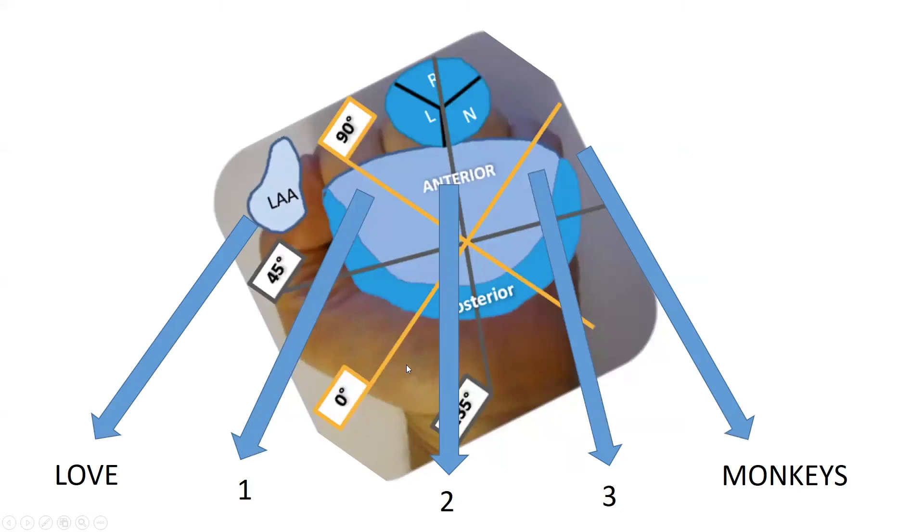In summary, we have two very useful views. The live 3D view, which when we orient in the surgeon's view, we have our left atrial appendage to our left, followed by A1P1, A2P2, A3P3. And with color Doppler, we can easily localize where the pathology is for mitral regurgitation and relay this to the surgeon or interventional cardiologist.